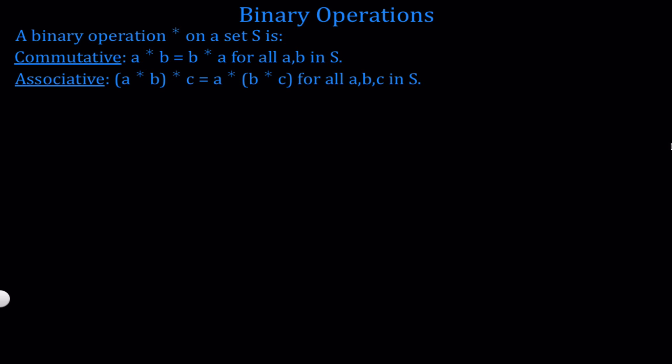A binary operation is associative if this property is satisfied: (A star B) star C equals A star (B star C), where in the first instance we do A star B first, and in the second instance we compute B star C first. This should hold for all A, B, and C in S.